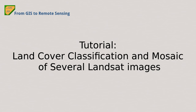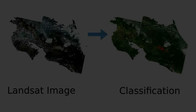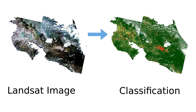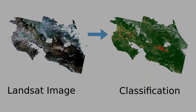Hi, I'm Luca Congedo and you're watching From GIS to Remote Sensing. This tutorial is about the land cover classification mosaic of several Landsat images. In particular, we are going to classify the area of Costa Rica, which is a country of about 51,000 km².